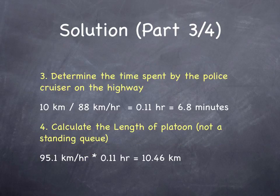Determine the time spent by the police cruiser on the highway. If he's driving for 10 kilometers at 88 kilometers an hour, he's there for 0.11 hours or 6.8 minutes. If the wave is growing at 95.1 kilometers per hour times 0.11 hours, then it's 10.46 kilometers long. So there's 10.46 kilometers of vehicles that are constrained because of this police cruiser starting a rolling roadblock.